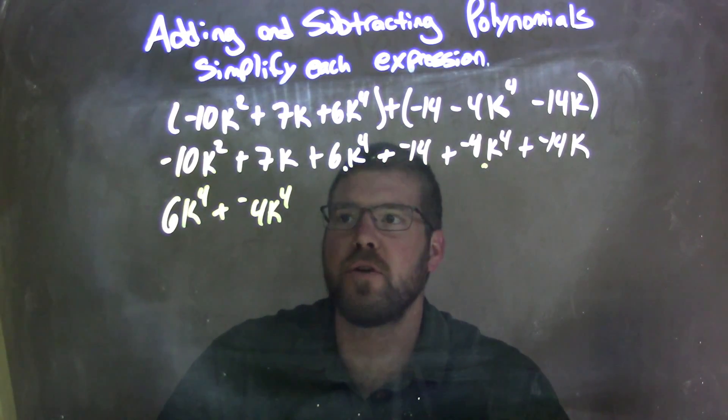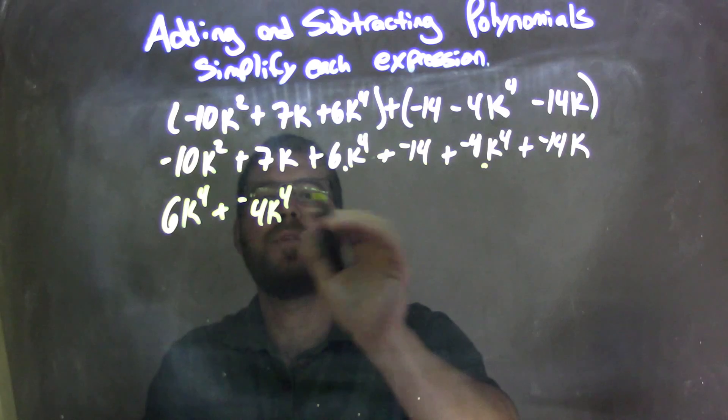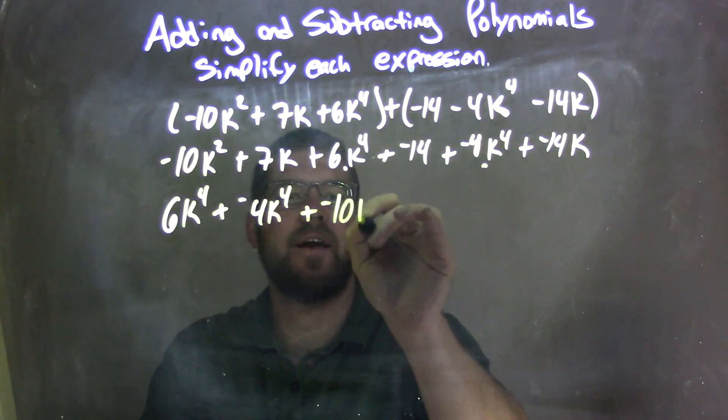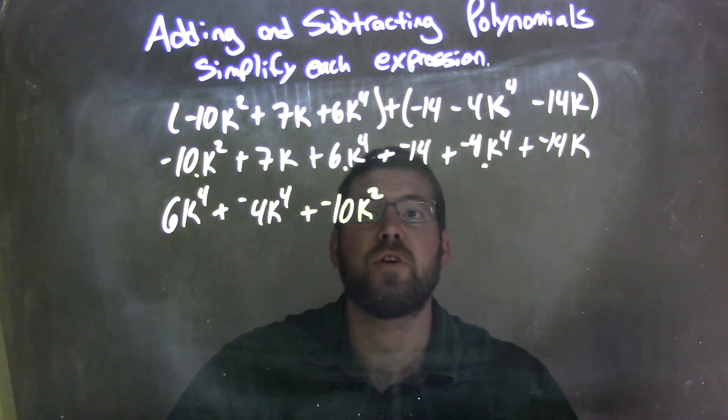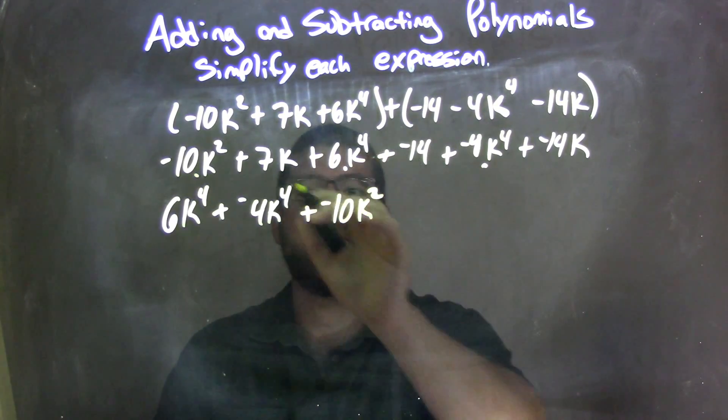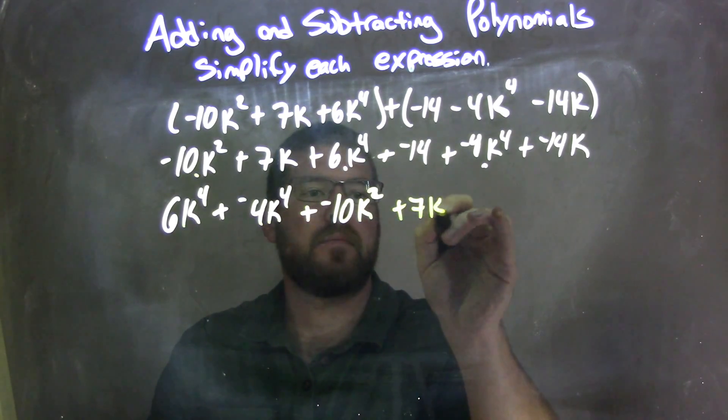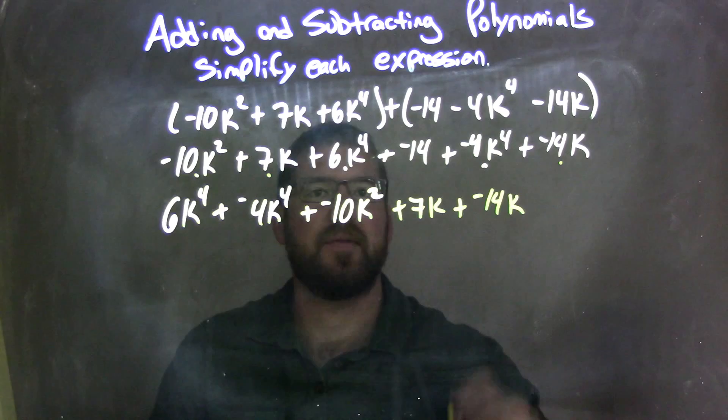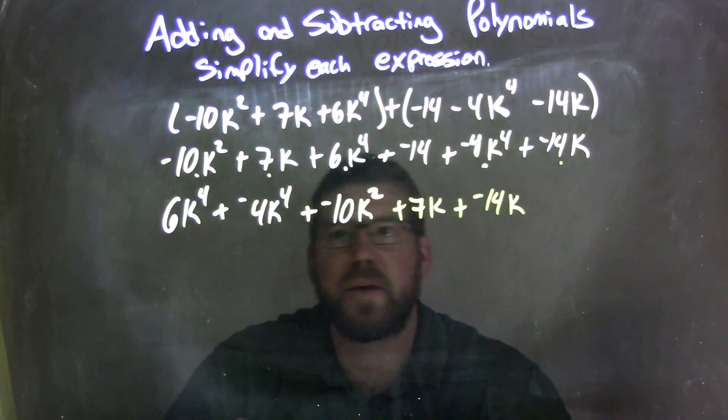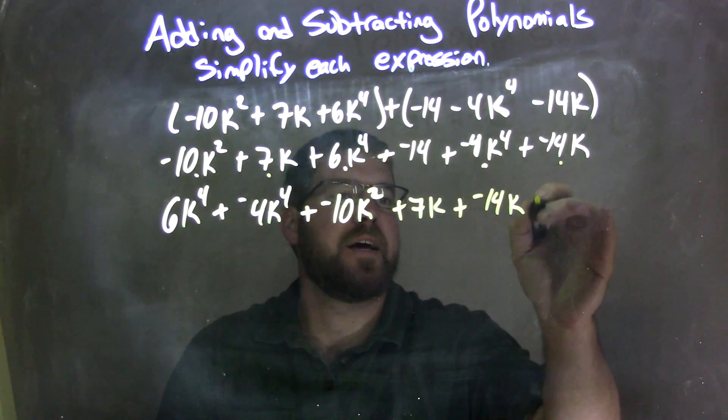I don't see anything at third power, so let's go to the second power. I see we have a negative 10k to the second power right here. Then from there I don't see anything else to the second power, so let's go to the first powers. We have 7k and a negative 14k right there. Lastly, I don't see anything over the k, so let's go to the constants and it's a negative 14.